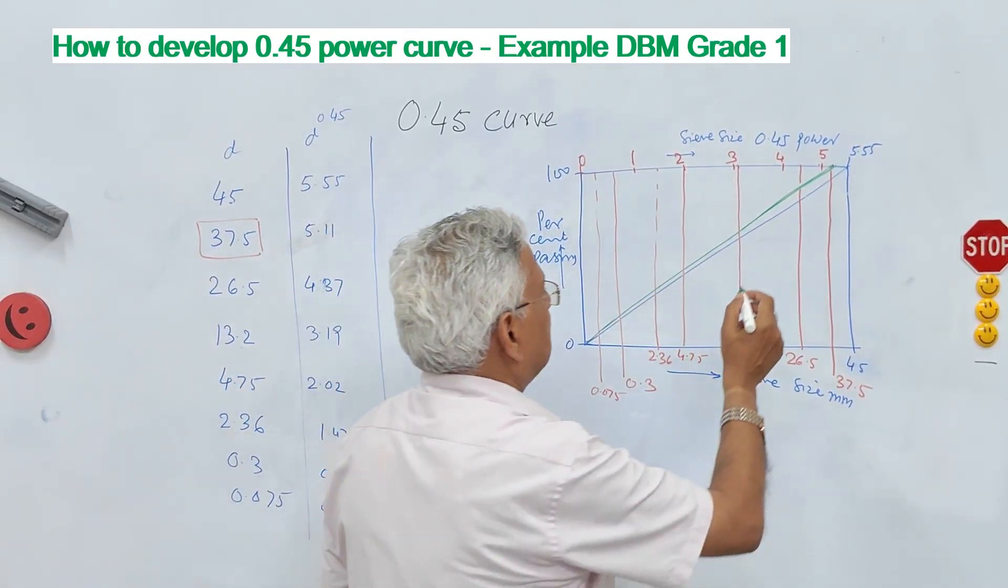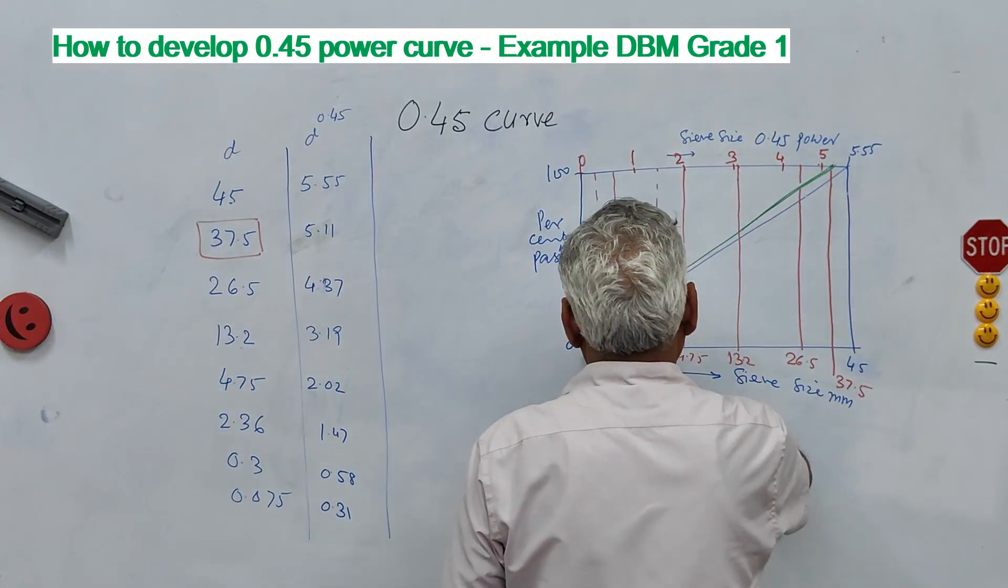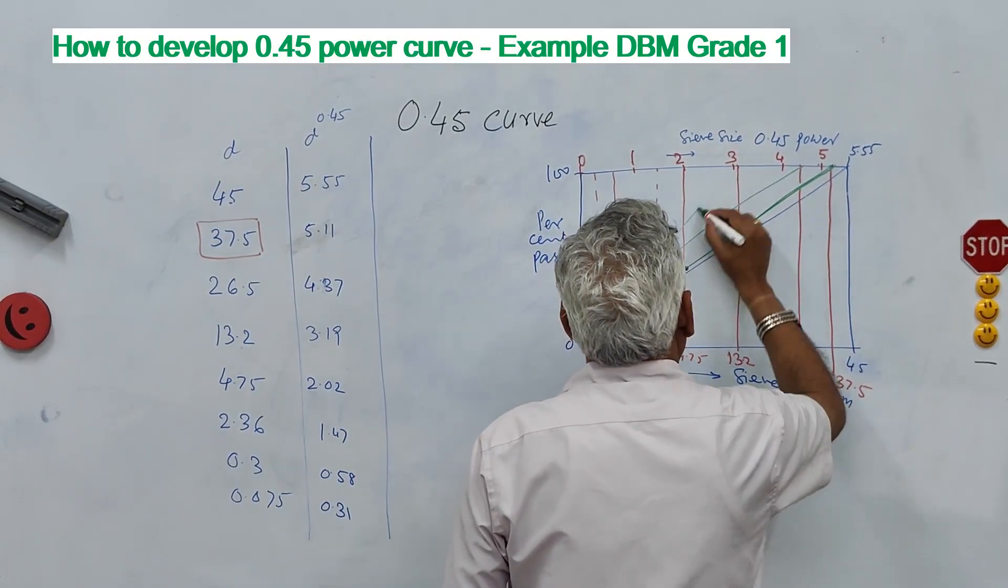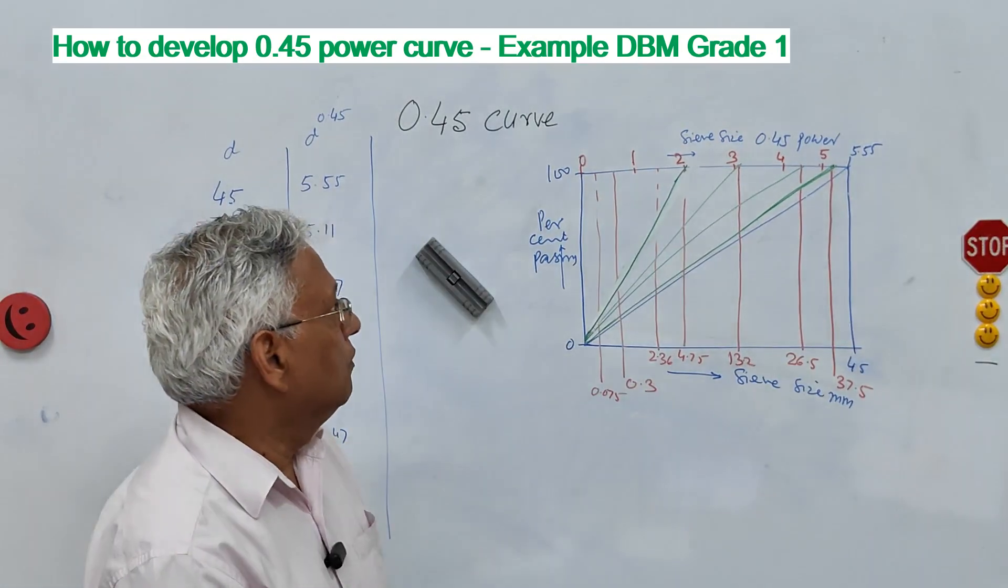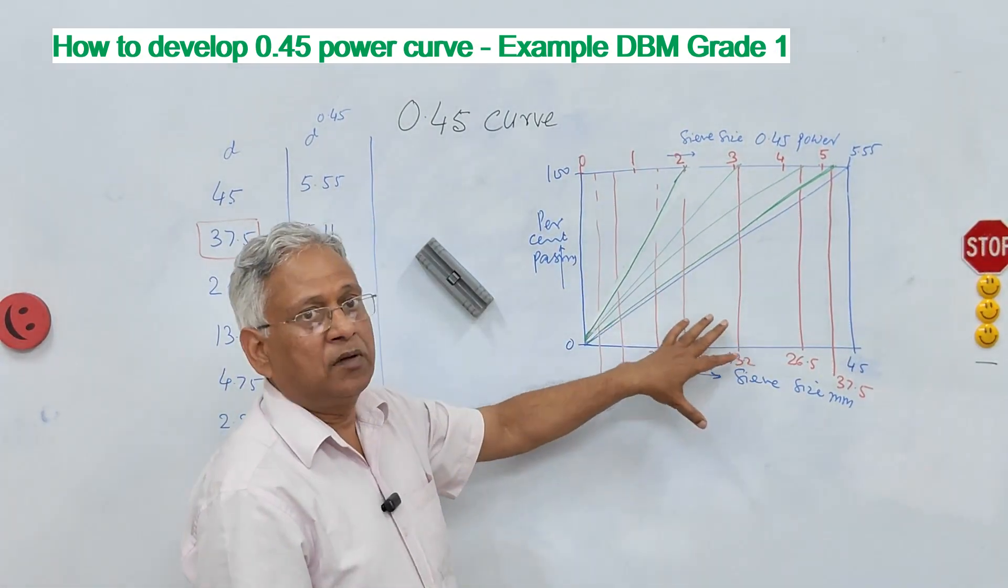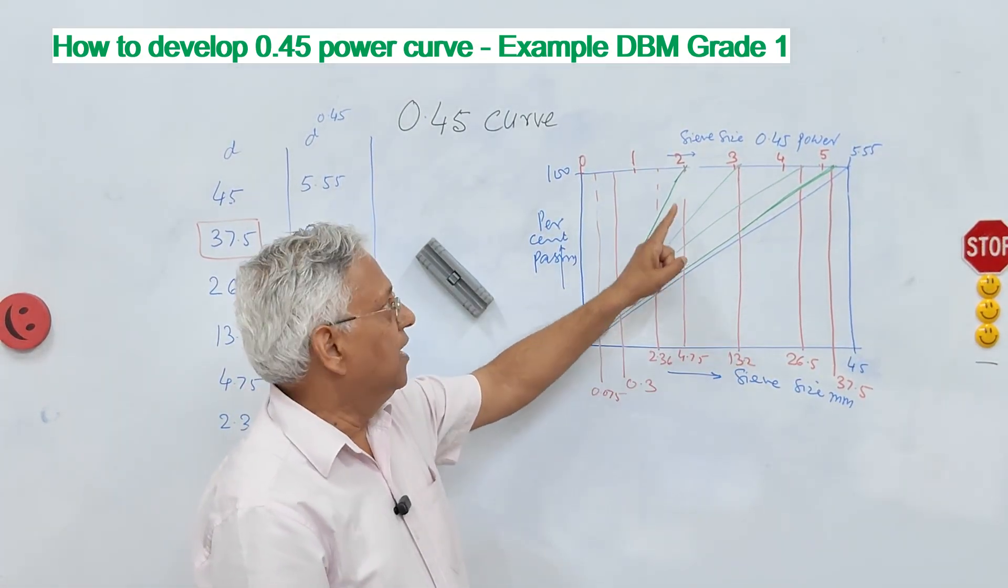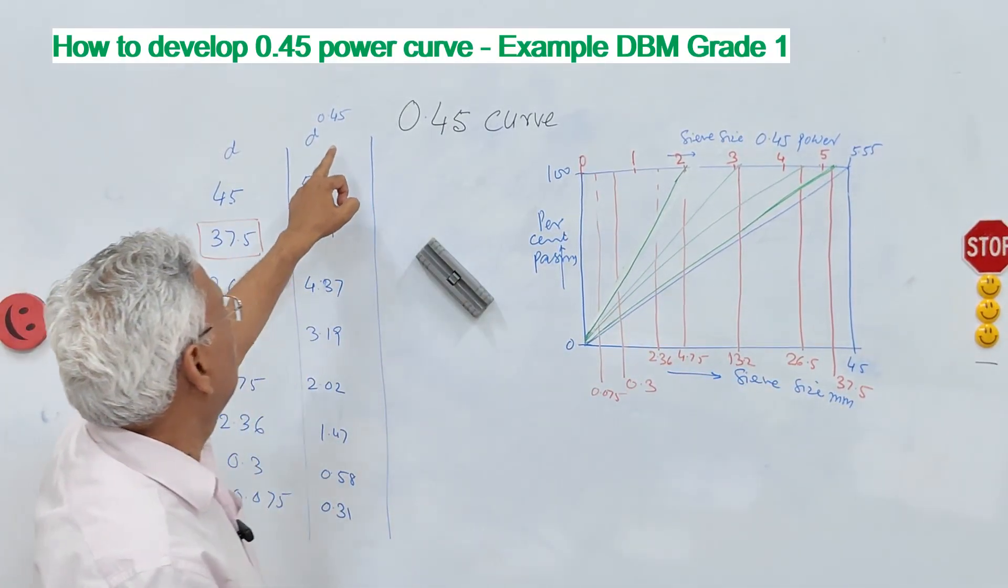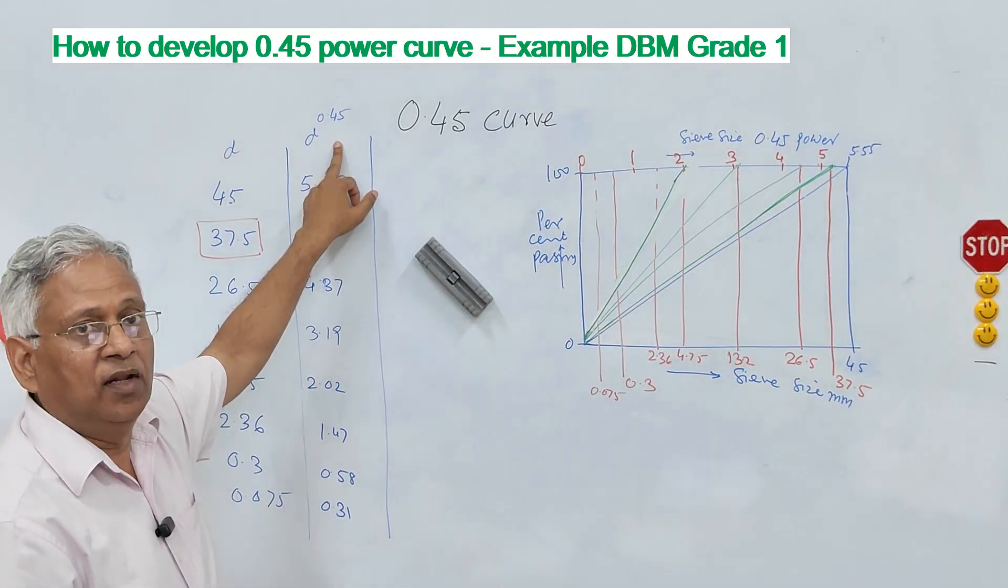Similarly if you have let us say maximum size of the aggregate 26.5 you draw this chart, you draw another chart. All these are straight lines. So all these will be straight lines on this graph paper, on this chart. And these are the lines of maximum density given by 0.45 curve or formula.